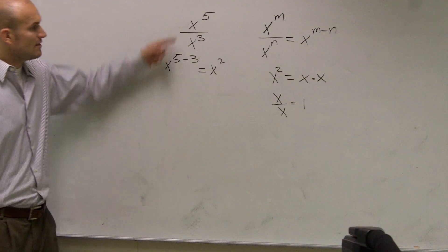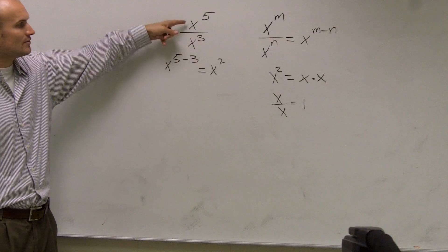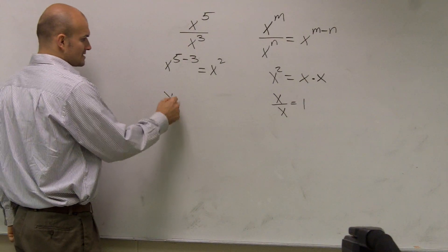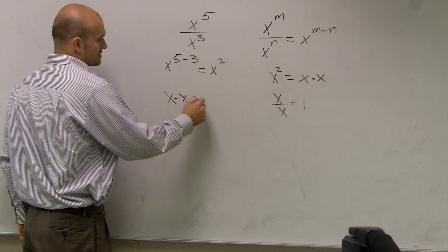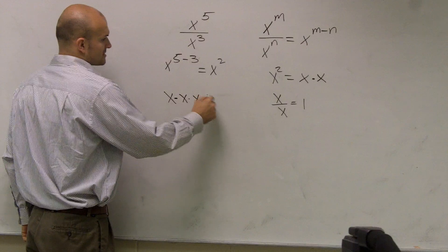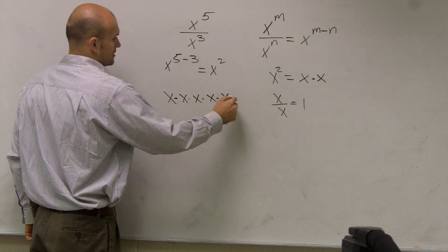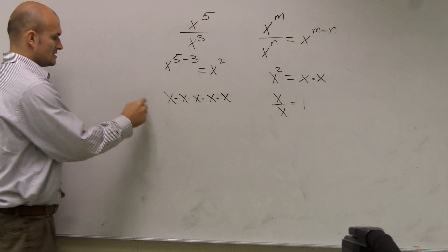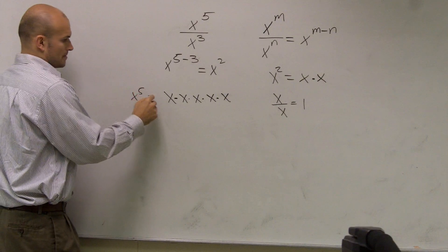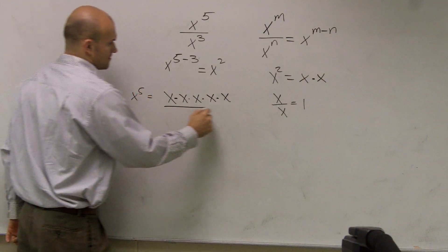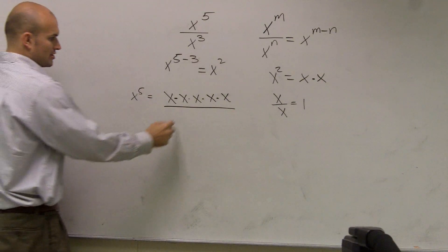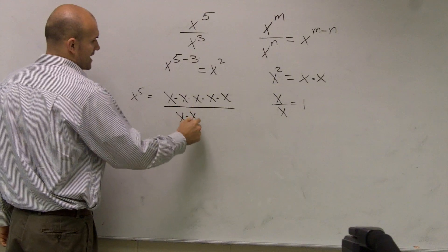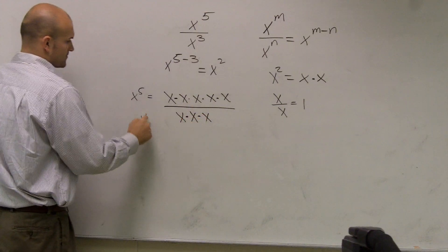So if I was to write this out, x to the fifth would be x times x times x times x times x. Isn't that equal to x to the fifth? And then x to the third would be x times x times x.